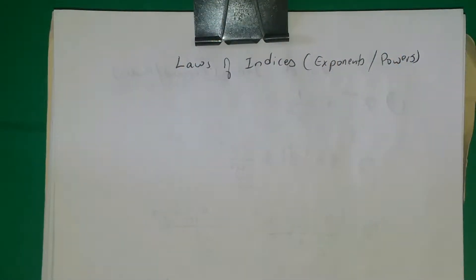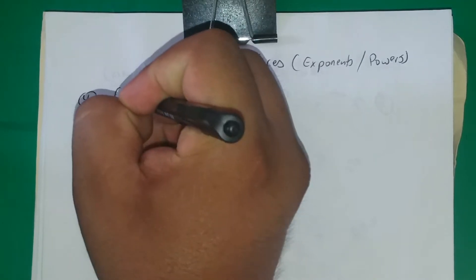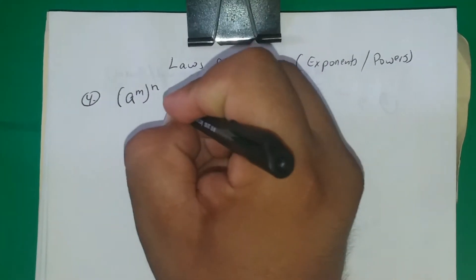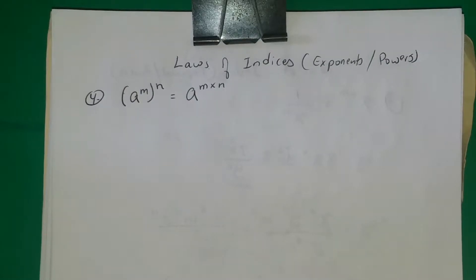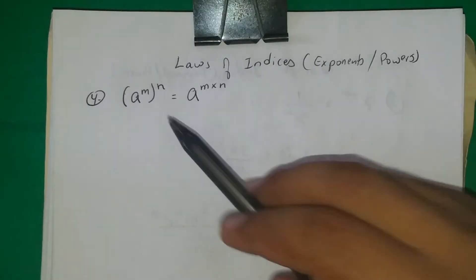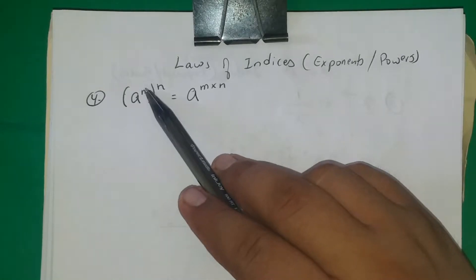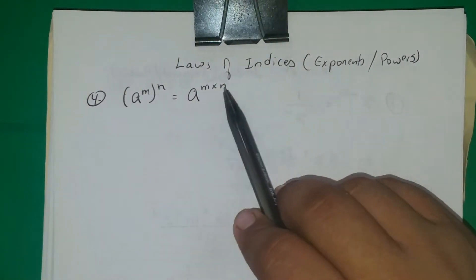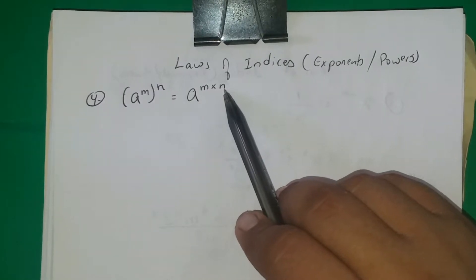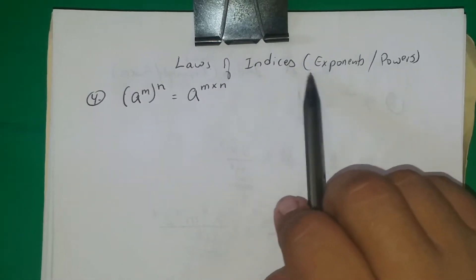This is going to be the fourth law of indices. The fourth one says a to the m, raised to the n, equals a to the m times n. Notice what it's saying: if you have a base raised to a power, and then you want to take this entire thing to another power, you keep the base and you multiply the powers. In most of these problems we are working with the power, that's why it's called laws of indices or laws of exponents.